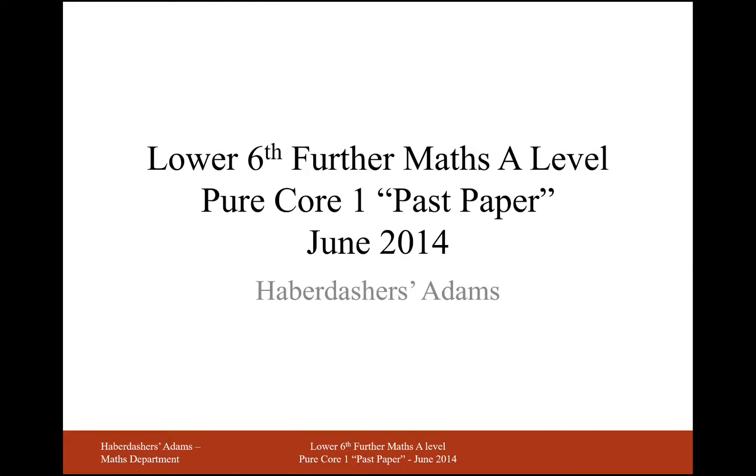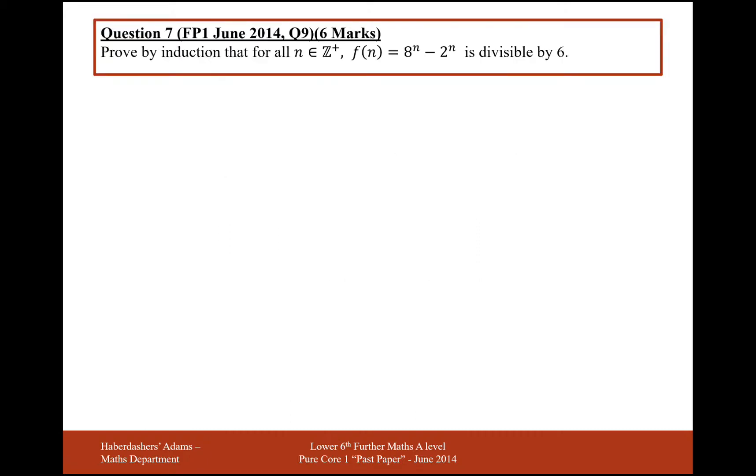Hello there and welcome to Lower Six Thirds Math A Level Pure Core, past paper June 2014. Okay, so we're looking at a proof by induction question here. This is 8 to the n minus 2 to the n is divisible by 6. So we'll start at the same point that we have to for all proof by induction questions.